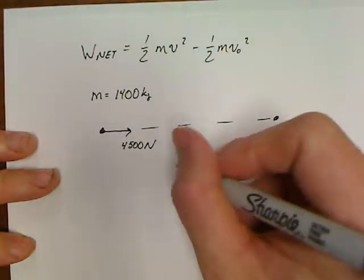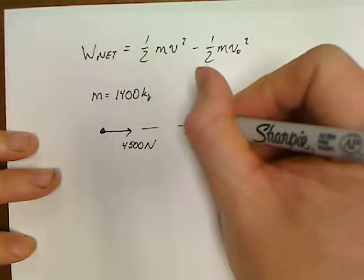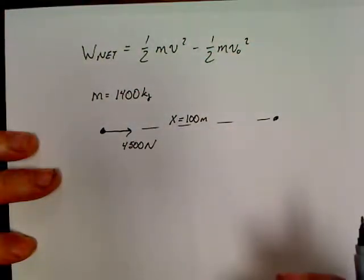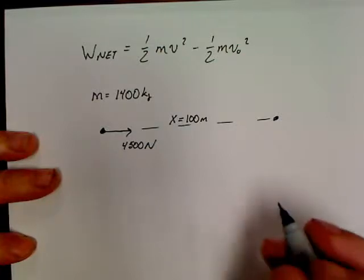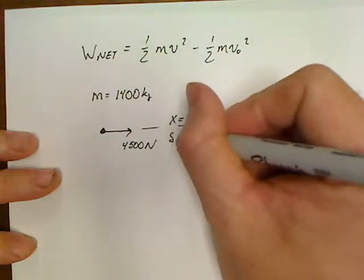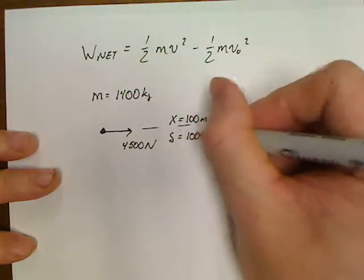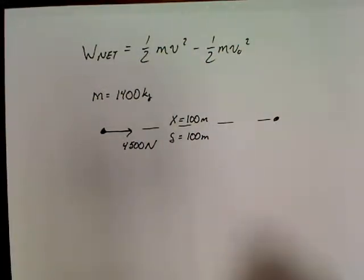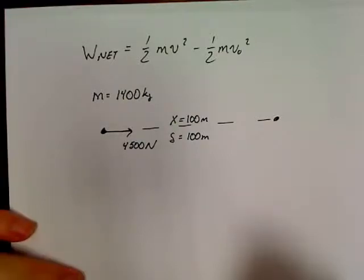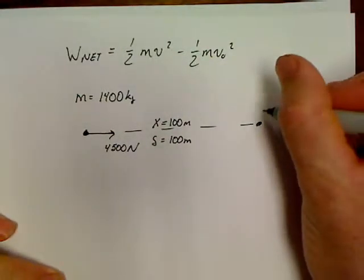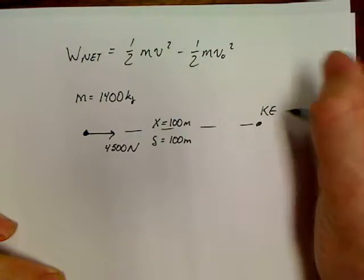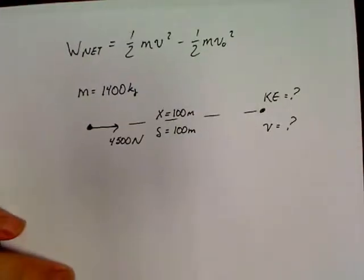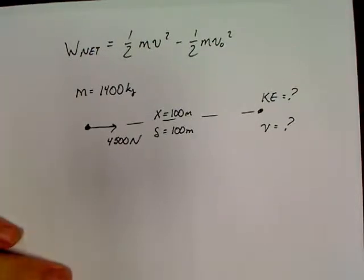It really doesn't say a whole lot. It just says that the car travels 100 meters. Now, this is what, in the past, I would typically refer to as an X, this displacement. But, we're doing work problems, so there's a good chance that's going to be my S in these work problems. So, my distance is going to be pretty much 100 meters in this one. This problem asked me to find two things. It wants to know this kinetic energy down here, and it wants to know this velocity. So, that's the two things I'm missing in this.